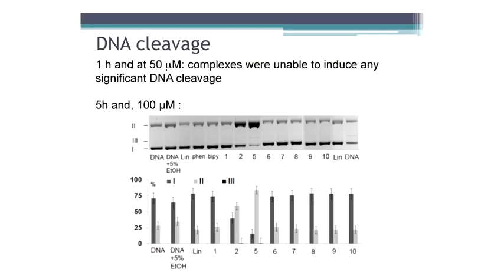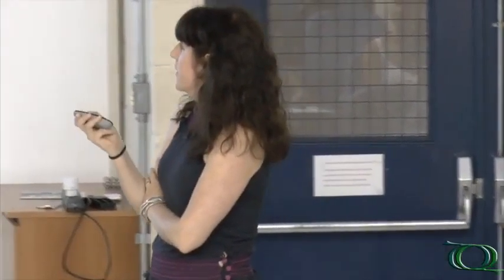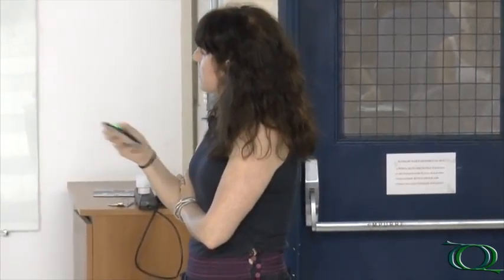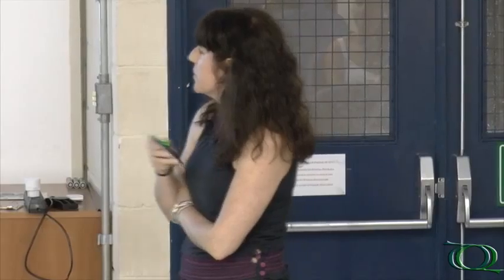However, if we increase the concentration to 100 micromolar and incubation time of 5 hours, we could see that complexes 2 and 5 — complexes up to 5 are copper complexes, from 6 to 10 are vanadium complexes — complexes 2 and 5 are able to induce changes in DNA, transforming the supercoils to nicked and maybe a little bit of linear form.